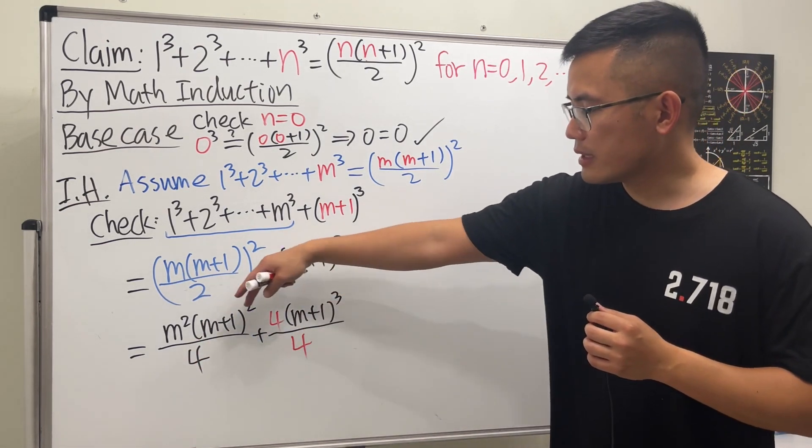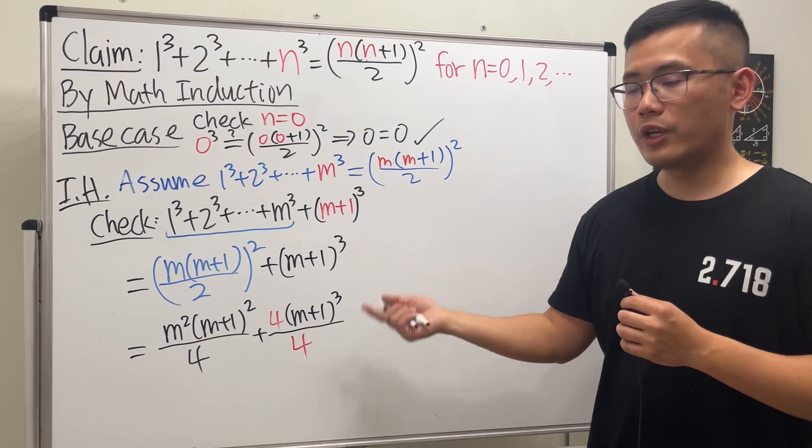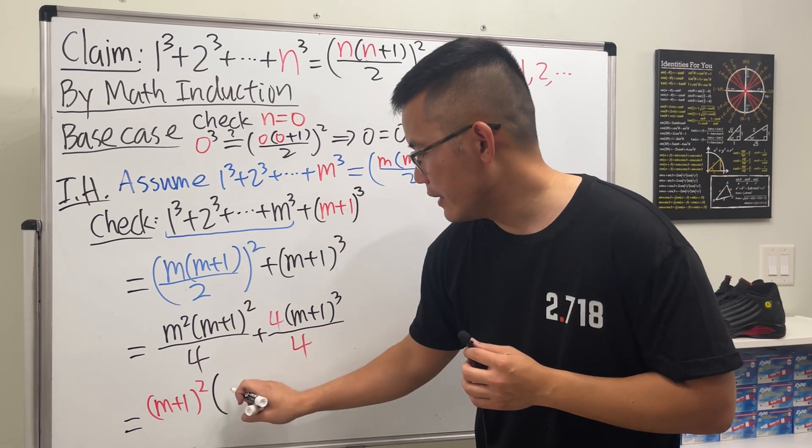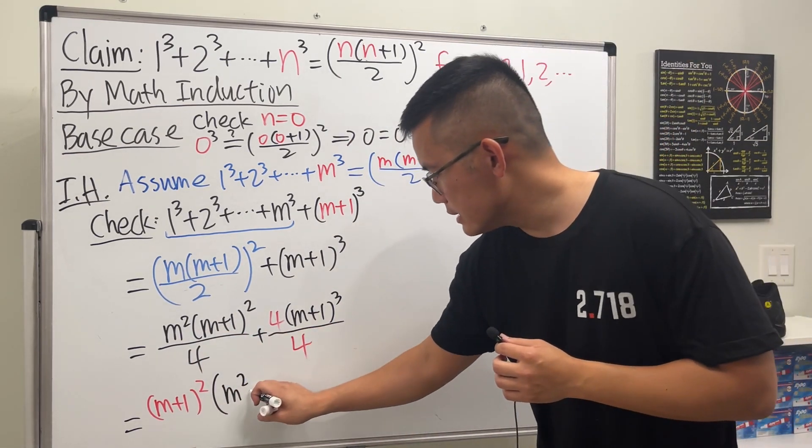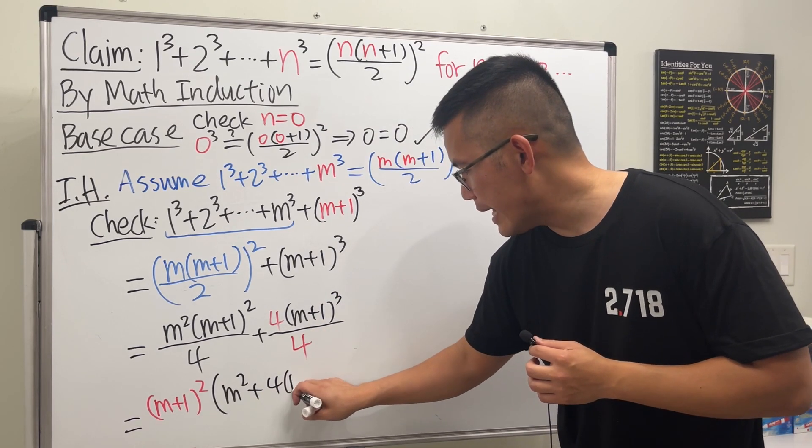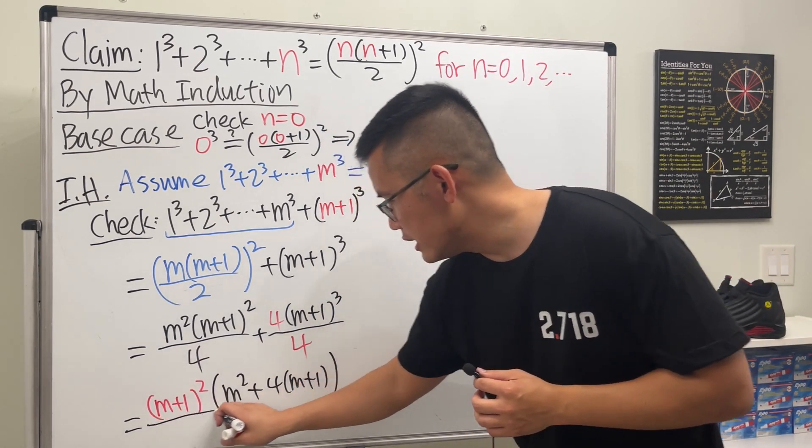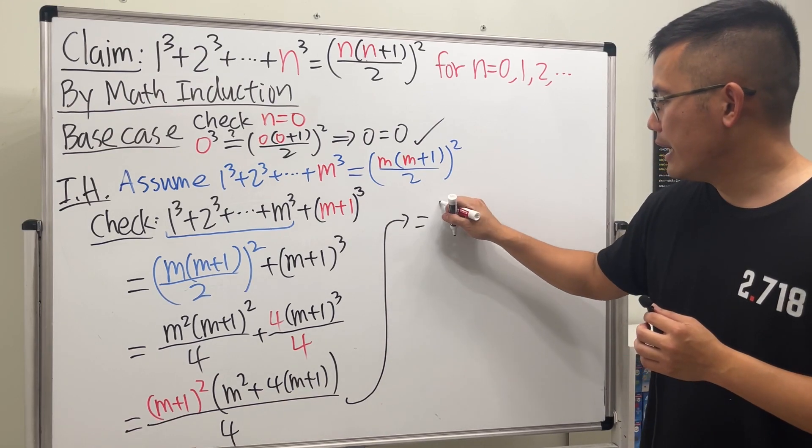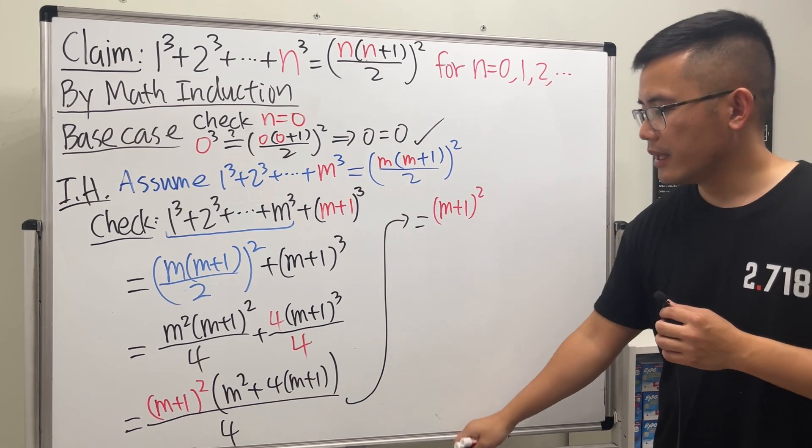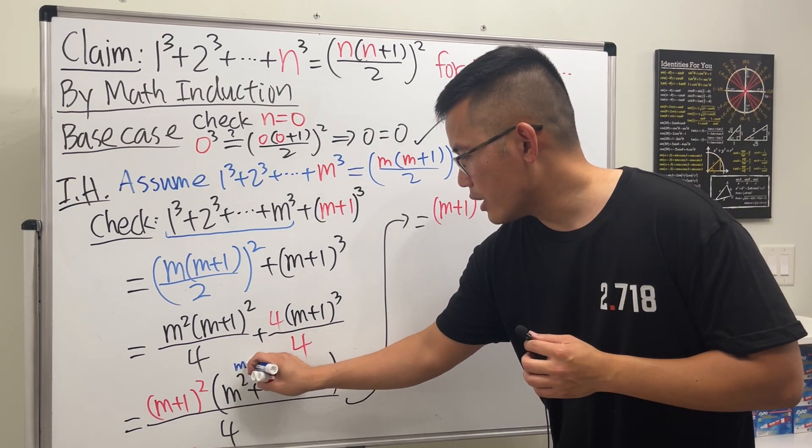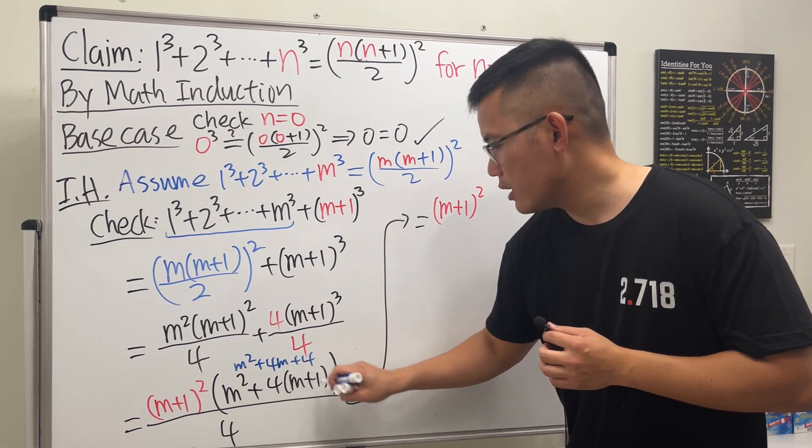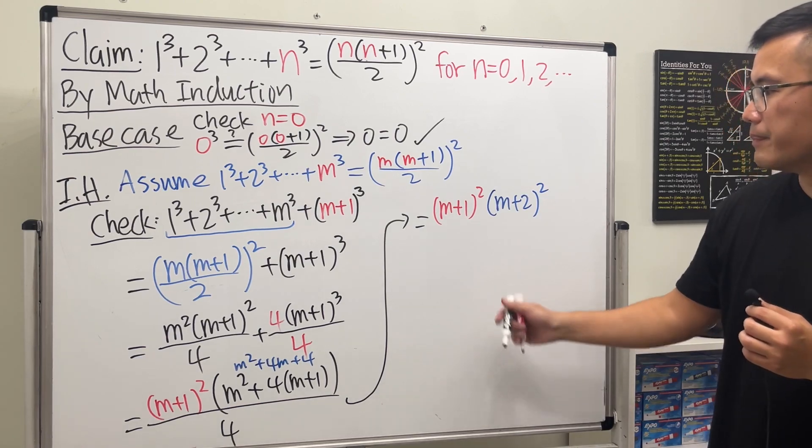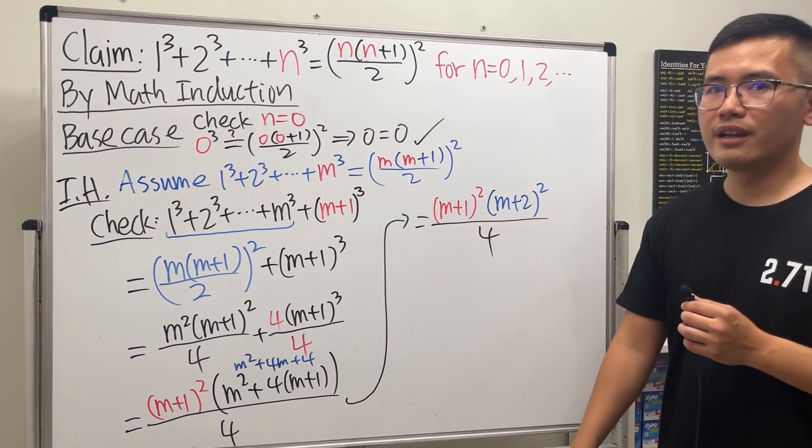When we combine them, on the top they both have (m+1)², so we can factor that out. So we will get (m+1)² and then we will have m² here plus 4 and then one more (m+1) in parentheses, and then all divided by 4. Whoa, this is actually really good, because what we have is this: (m+1)². This part is just m² + 4m + 4, and we can factor it.